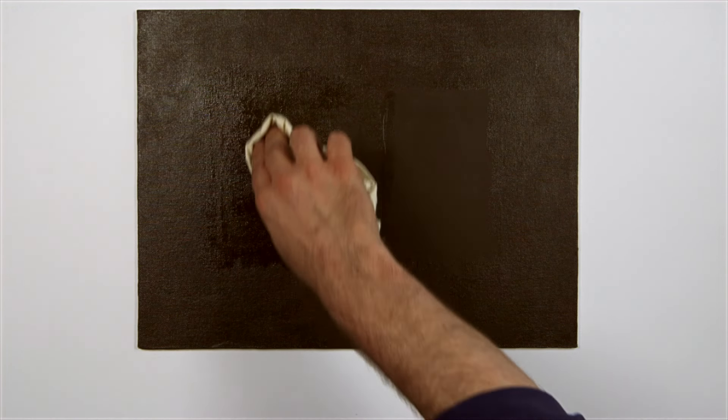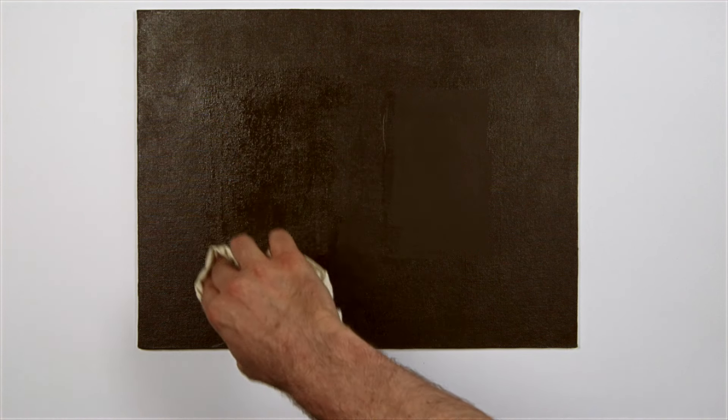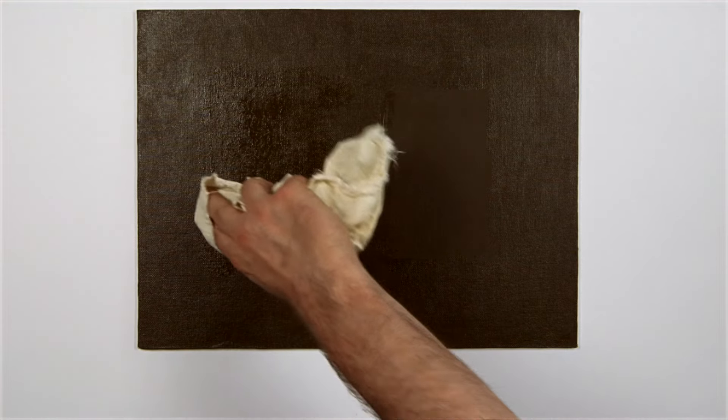I can either work immediately on the painting or let it dry, but from this point on I'll have to use the oiling out mixture to dilute my paint and progressively fatten it with each layer following the fat over lean rule.